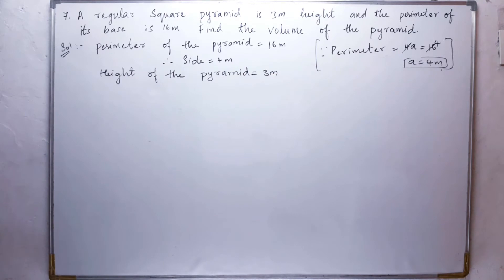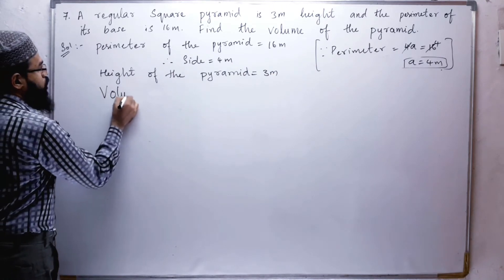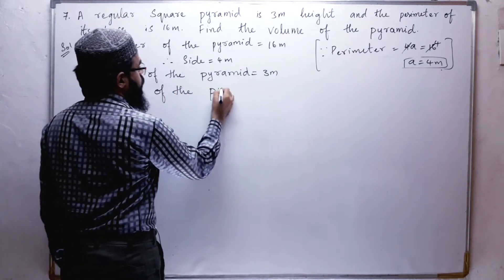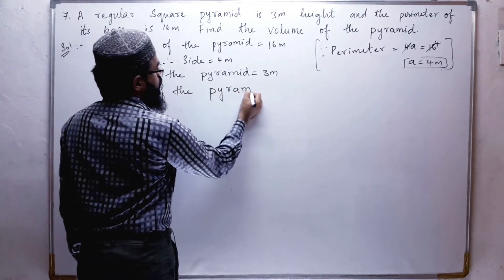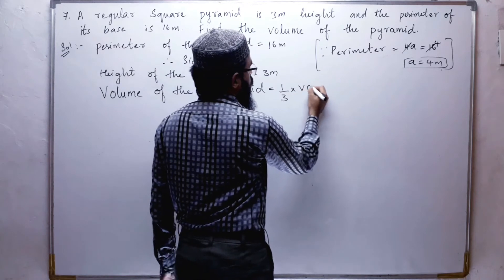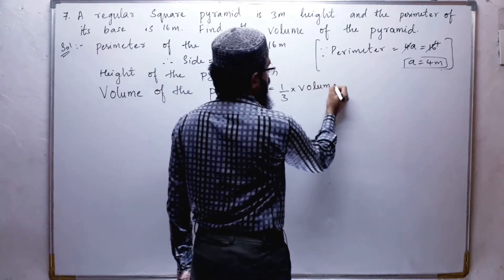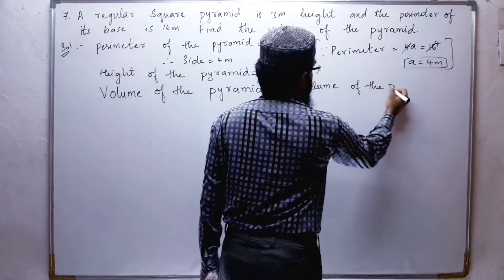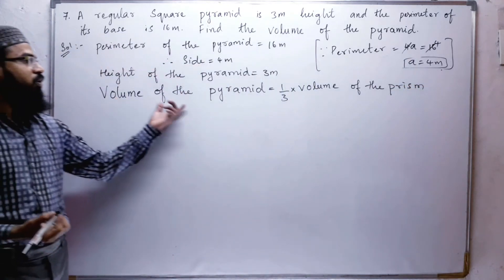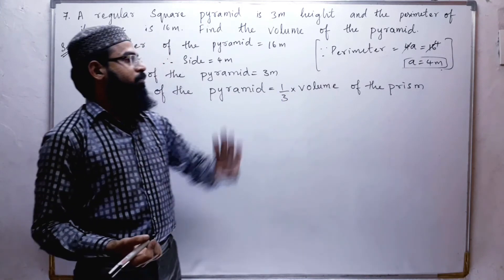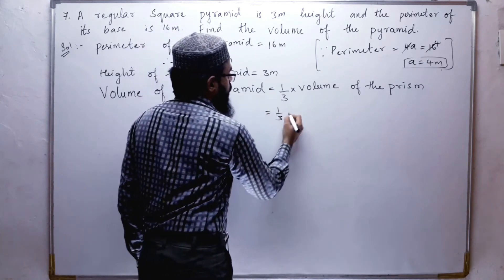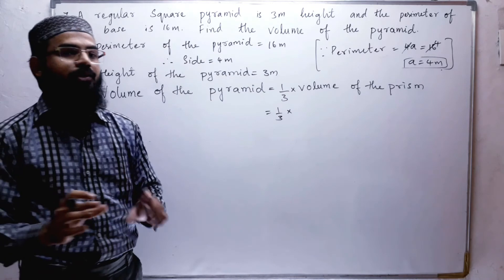We have to find the volume of the pyramid. The volume of a pyramid is equal to 1/3 times the volume of the prism, that is 1/3 times base area times height. This is the formula for the volume of the pyramid.